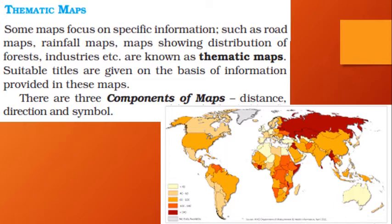There are three important components of maps that we are going to study in this lesson: distance, direction, and symbol. Let's look at each of these components in detail.